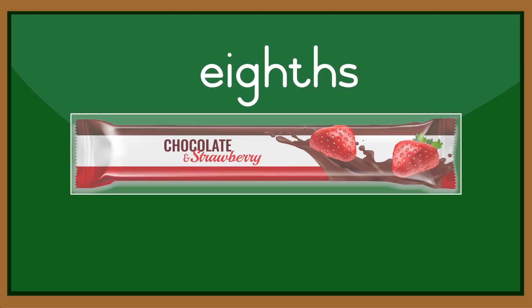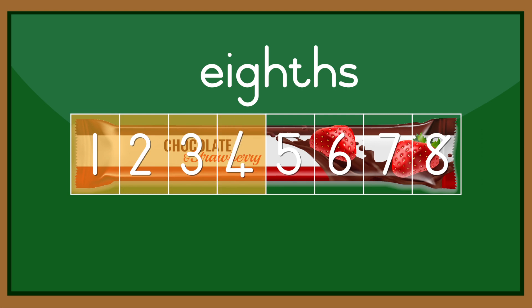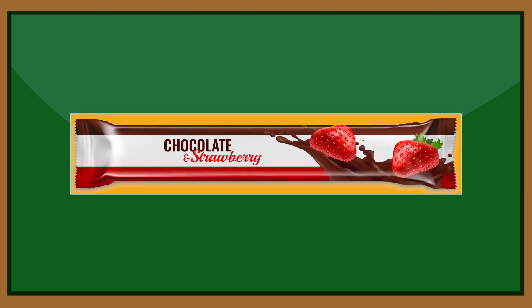In this example, the whole is divided into eight parts. Those parts are called eighths. One eighth, two eighths, three eighths, four eighths, five eighths, six eighths, seven eighths, eight eighths, which equal a whole.